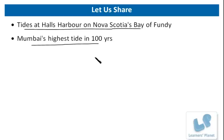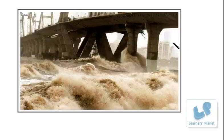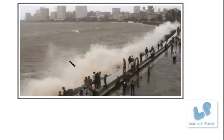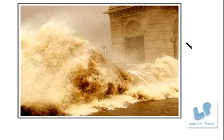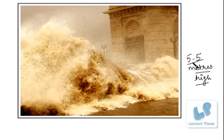The second notable event is Mumbai's highest tide in 100 years, which occurred on 24th July 2009. The sea waves rode the tarmac near the Gateway of India, Marine Drive, Juhu, and Worli, among other places. Mumbai was lashed by tidal waves which were 5.5 meters high. This was one of the very biggest news stories about tides which occurred in India.